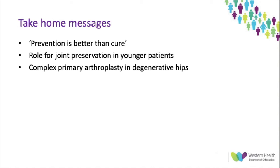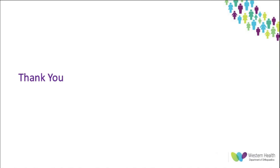Finally, some take-home messages: prevention is better than cure — managing dysplastic hips well prior to tri-radiate cartilage closure gives better long-term outcomes. Beyond this, you're moving into a joint preservation mode considering periacetabular osteotomy, but it is a major undertaking requiring careful patient selection and thorough screening for degenerative changes. Arthroplasty in these patients is very complex and requires significant pre-operative planning, including specialized imaging to ensure the bony anatomy will support the prosthesis and that appropriate implants are ordered and available.